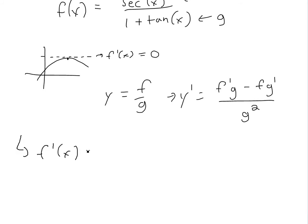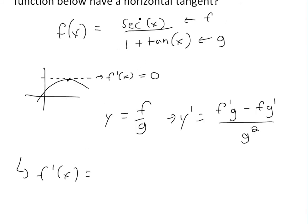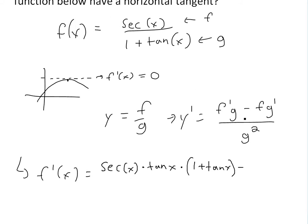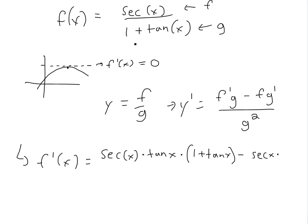So f prime of x equals the derivative of secant of x. As I showed in my earlier video, the derivative of secant x is secant x times tan of x. That would be the f prime part, and then we have to multiply it by g, which is 1 plus tan of x. So we get secant x times tan x, multiplied by 1 plus tan x.